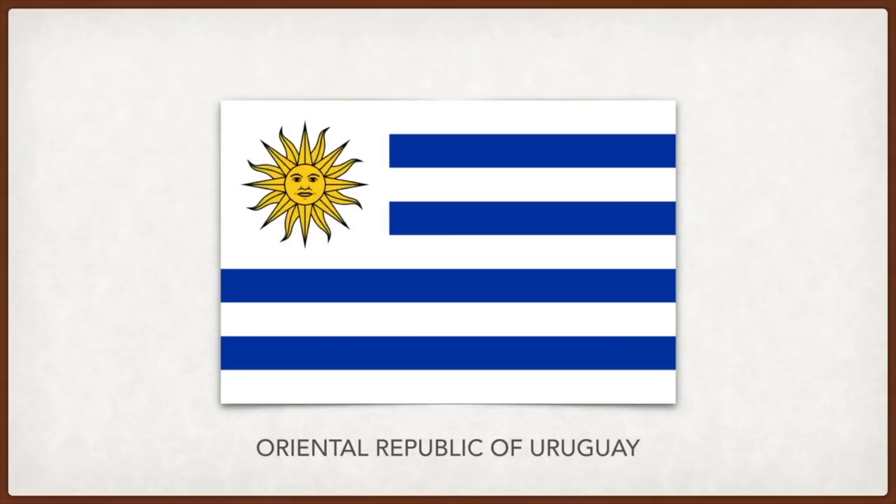Uruguay: the nine blue and white stripes stand for the nine original departments of the republic. On the white canton, the golden Sun of May is a symbol of when the sun appeared during a major public gathering on May 25th, 1810 in Buenos Aires, and was taken as a good omen for the struggle for independence of South America from Spain.